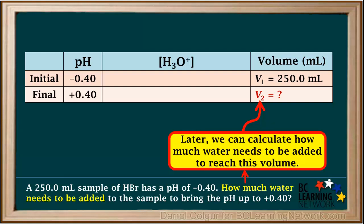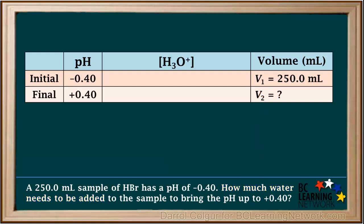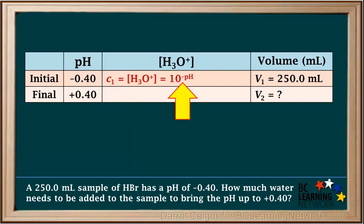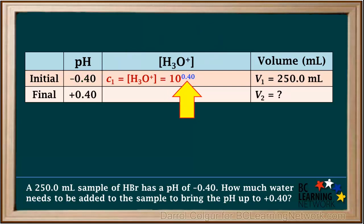We can calculate how much water needs to be added to reach this volume. In order to do a dilution calculation, we must change both pHs into hydronium ion concentrations. We'll call the initial hydronium ion concentration C1. The formula we use is that the concentration of hydronium is 10 to the negative pH, which is 10 to the negative of negative 0.4, which is 10 to the positive 0.4, giving us 2.5 molar.